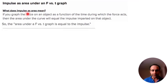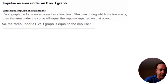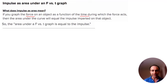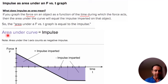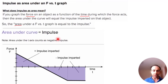If we graph the force on an object as a function of time during which the force acts, force is our y-axis and time is our x-axis, giving us an F versus T graph. The entire area under the curve, just like with work, is going to be equivalent to the impulse. So the area under an F versus T curve equals the impulse, which is our delta P.